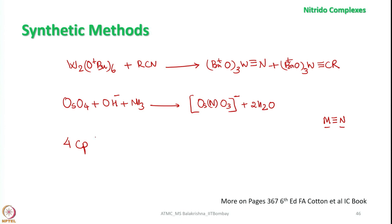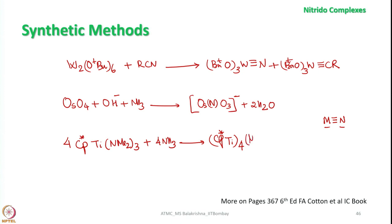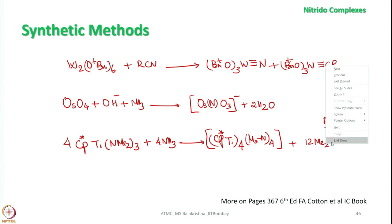Similarly, we can also make nitrides having other ligands such as cyclopentadienyl ligand. Here we have chosen Cp*, which means pentamethylcyclopentadienyl. This is also called an aminolysis reaction. These are some of the important methods of preparation of nitride complexes.